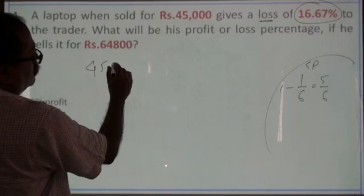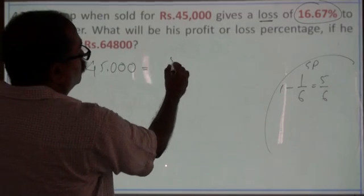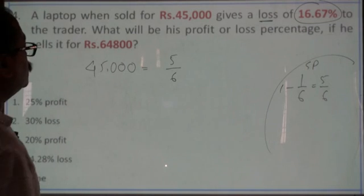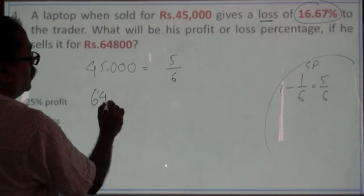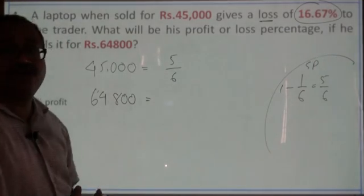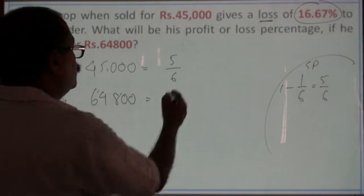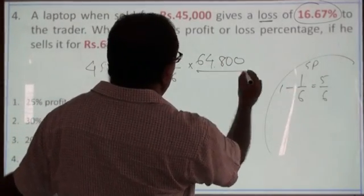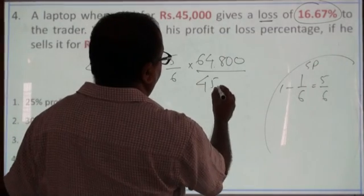So, 45,000 is equal to 5 sixth of the cost price, then 64,800 will be what part of the cost price? So, into 64,800 by 45,000.